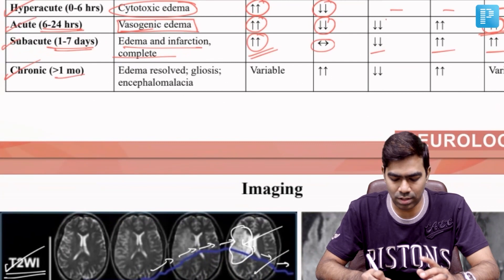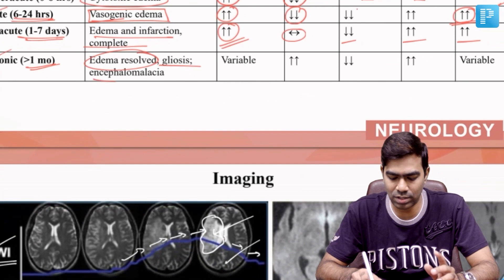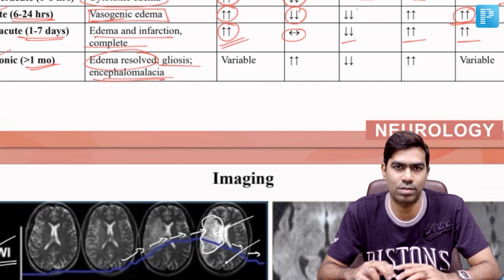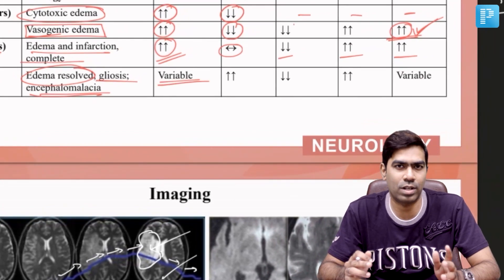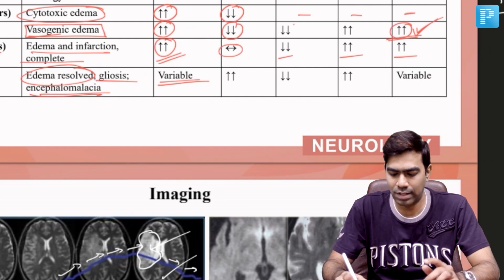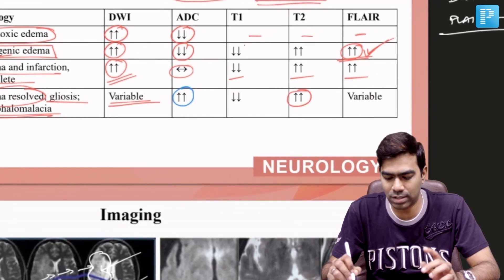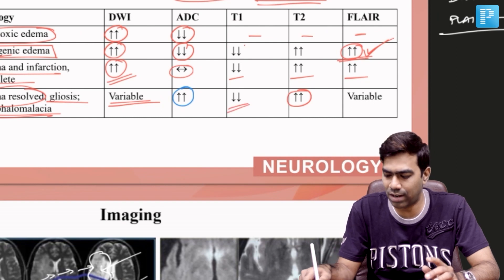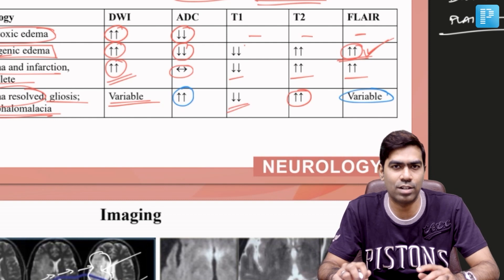In chronic strokes, more than one month old, edema has resolved and there is onset of gliosis with cystic encephalomalacia from liquefactory necrosis. DWI is not reliable here — it can be normal, variable, or show slightly lower signals. ADC is very reliable, showing consistently high signals. T2 is also very reliable with consistently high signals. T1 shows low signal, and FLAIR is not reliable — it can be normal or show slightly low signal.